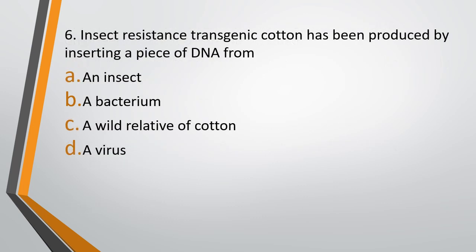Question 6. Insect resistance transgenic cotton has been produced by inserting a piece of DNA from: Option A, an insect. Option B, a bacterium. Option C, a wild relative of cotton. Option D, a virus. The correct answer is option B, that is a bacteria. The insect resistance transgenic cotton is referring to BT cotton. BT stands for Bacillus thuringiensis, which is a bacteria. So this insect resistance piece of DNA came from a bacteria, that is Bacillus thuringiensis.